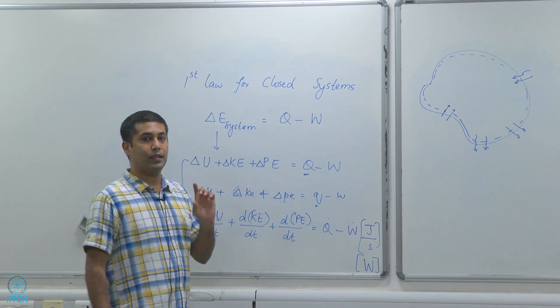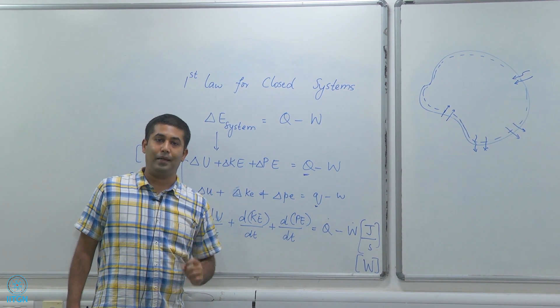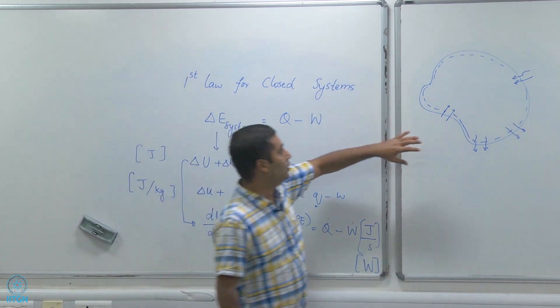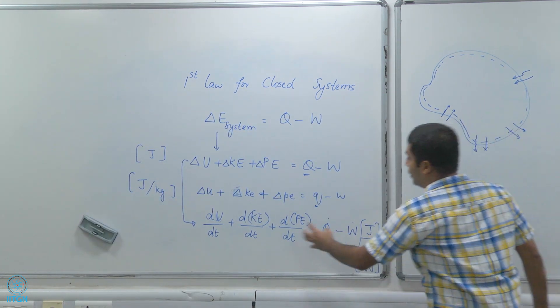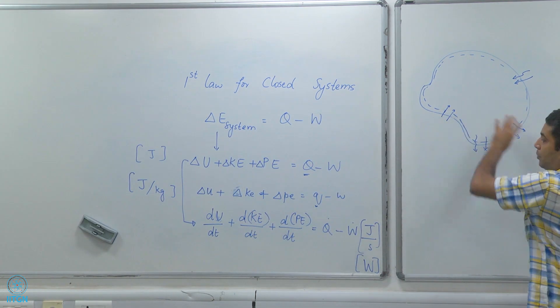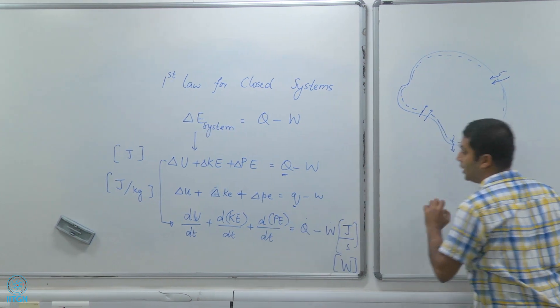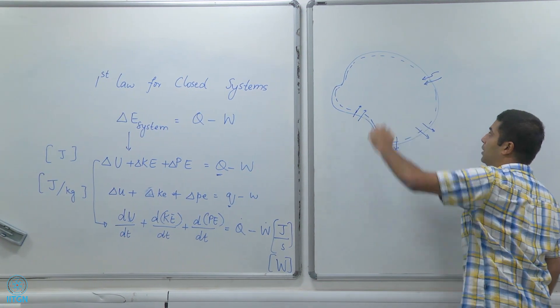This one is the rate of change of internal energy per unit time inside the system. This is the rate of change of kinetic energy of the system per unit time. This is the rate of change of potential energy of this system per unit time.